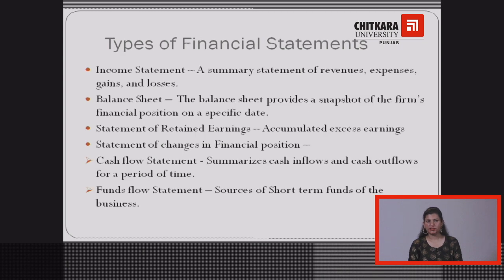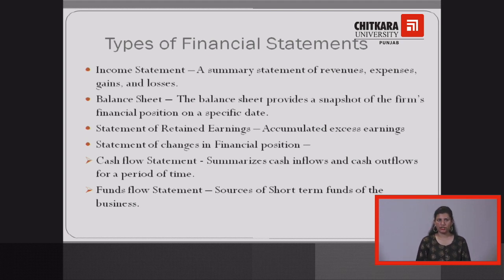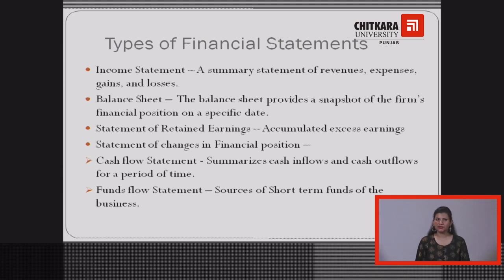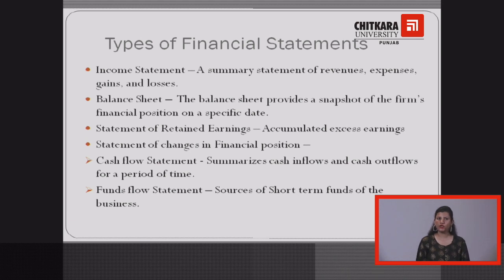Next, what are the types of financial statements? There are four types. Number one is the income statement, which is also known as profit and loss account. The income statement shows the expenses, incomes, losses and gains of a business enterprise. It gives us a summarized view of revenues, expenses, gains and losses.